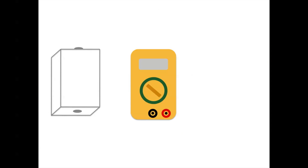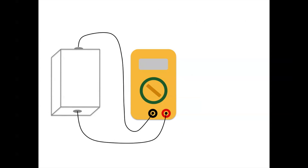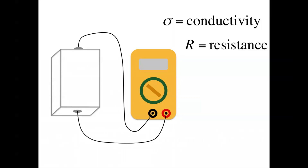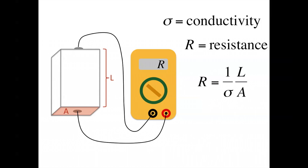Let's go over our experiment. We'll start with a slab of silicon, which we attach metal contacts to. We use an ohmmeter that we connect to our sample with metal wires to measure the conductivity. The conductivity describes how well electricity can flow through the material. The measured resistance from our ohmmeter is related to the inverse of the conductivity. The resistance also varies according to the physical size and shape of our sample, which adds a length over area term to our equation.